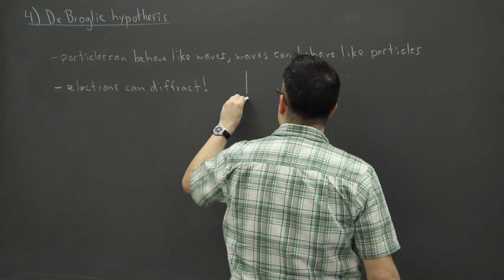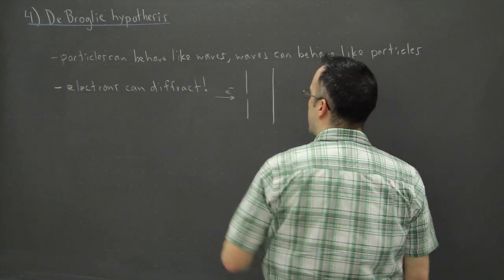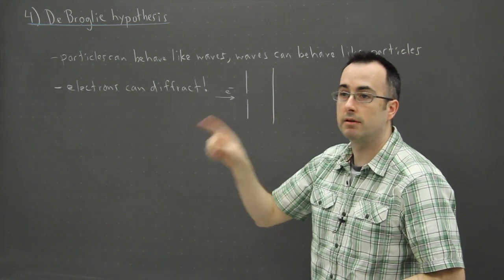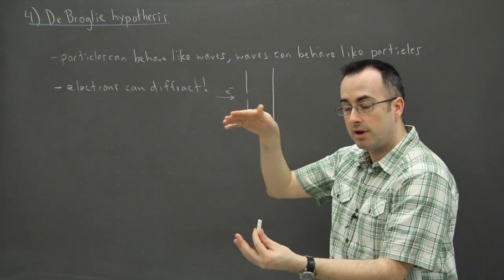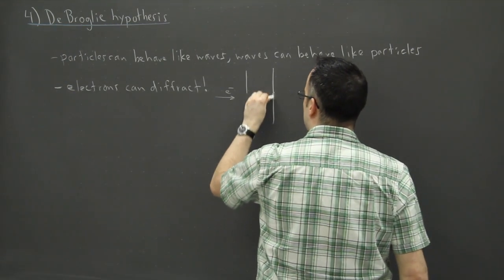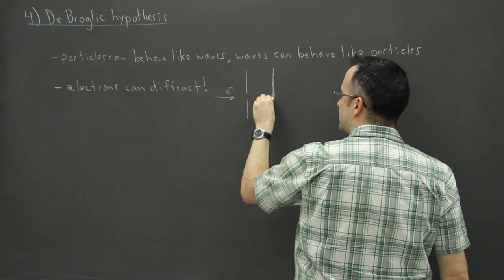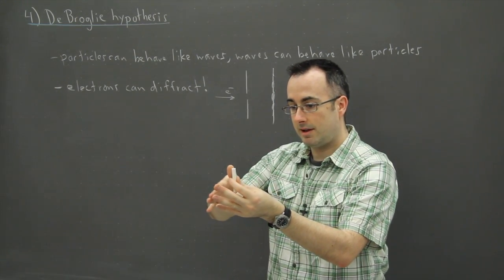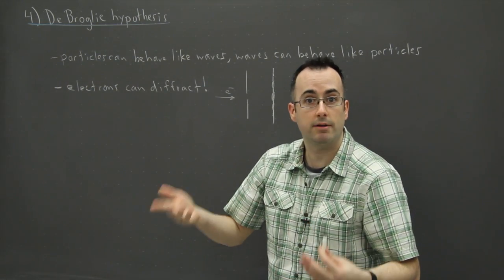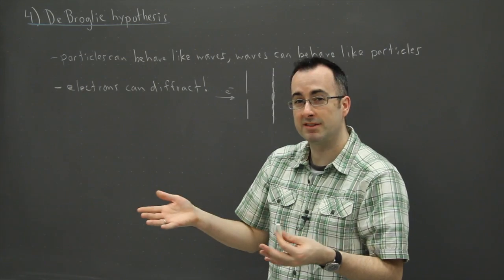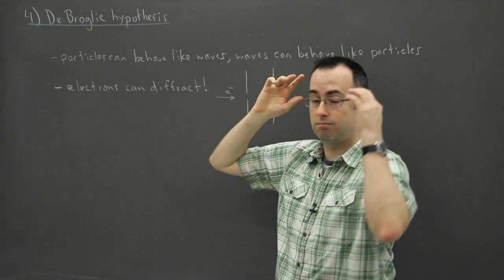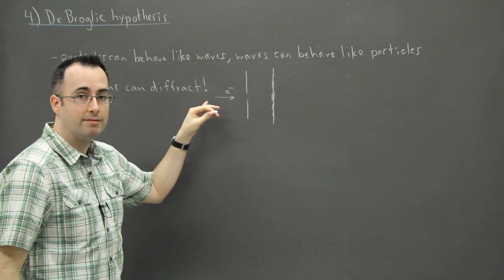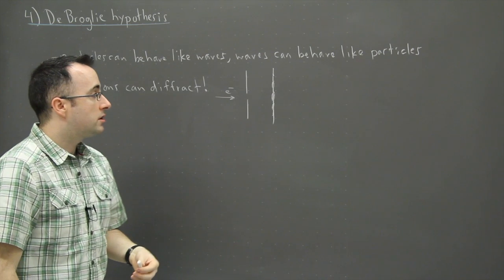Let's say we have electrons coming in and a wall with a slit — we were doing this with light, but imagine you're shooting electrons one after the other. It turns out these electrons can actually interfere with each other and make a diffraction pattern: lots more electrons in the center, then a space, then some more over here. Electrons can actually split up and interfere constructively or destructively. It's really hard to wrap our brains around, but electrons really do diffract.